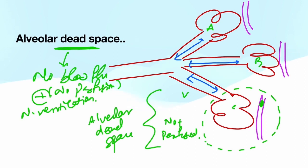And the concept of shunt is just the opposite. So hope you got some idea regarding alveolar dead space. This part of the alveoli, segment C, is getting ventilated but not perfused.